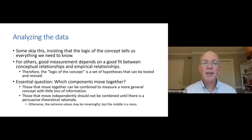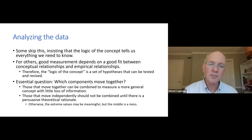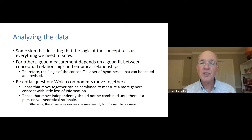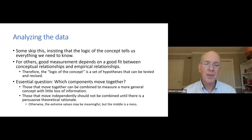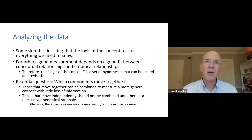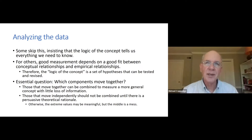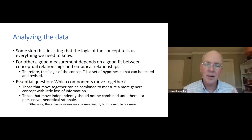Components that move together can be combined to measure a more general concept with relatively little loss of information. Components that move independently of one another probably should not be combined until you have a persuasive theoretical rationale for how to combine them. Otherwise, what you get is that all the countries with the highest ratings end up at the top of the scale and all the countries with the lowest ratings end up at the bottom, but most countries are high on some things and low on others, and they all get treated somewhere in the middle in a way that's not very meaningful.